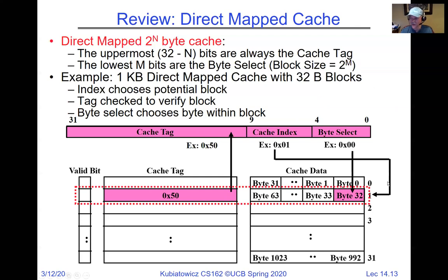More bytes per block means higher spatial locality. In a 32-byte block, a miss pulls 32 bytes from DRAM. If blocks were 64 or 128 bytes, we'd pull in more bytes at once, giving higher spatial locality. Modern processors tend to have around 128 bytes in their cache lines. In this example, n is 10 (tag portion) and m is 5 (block size bits). The tag is the part of the address that doesn't directly index into the cache.